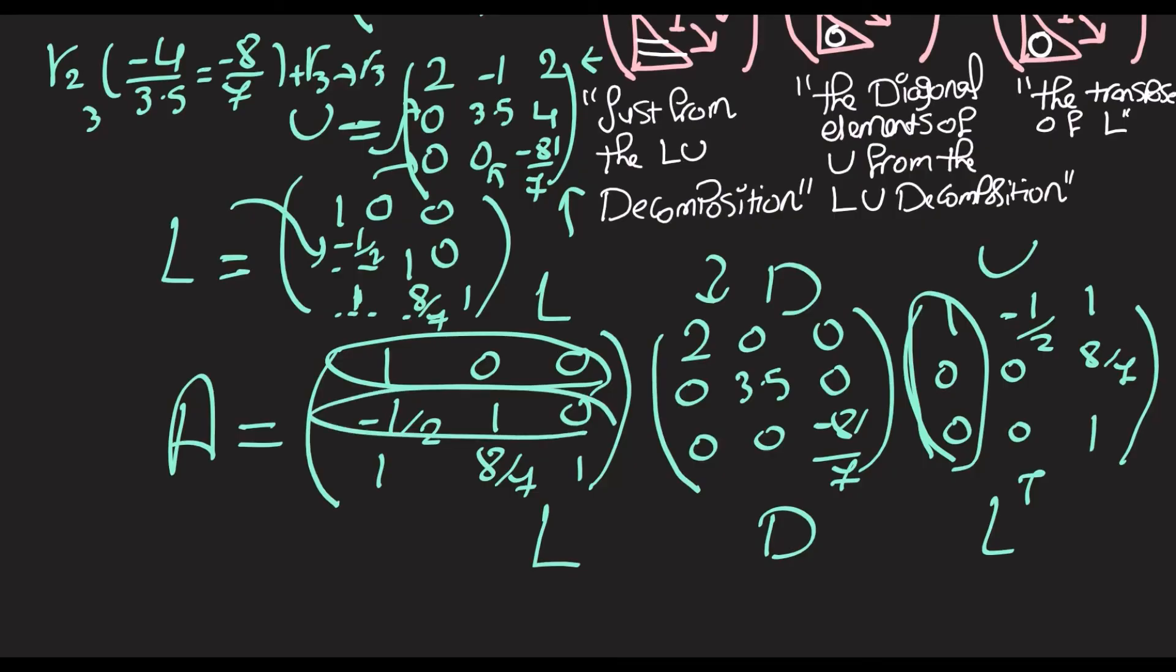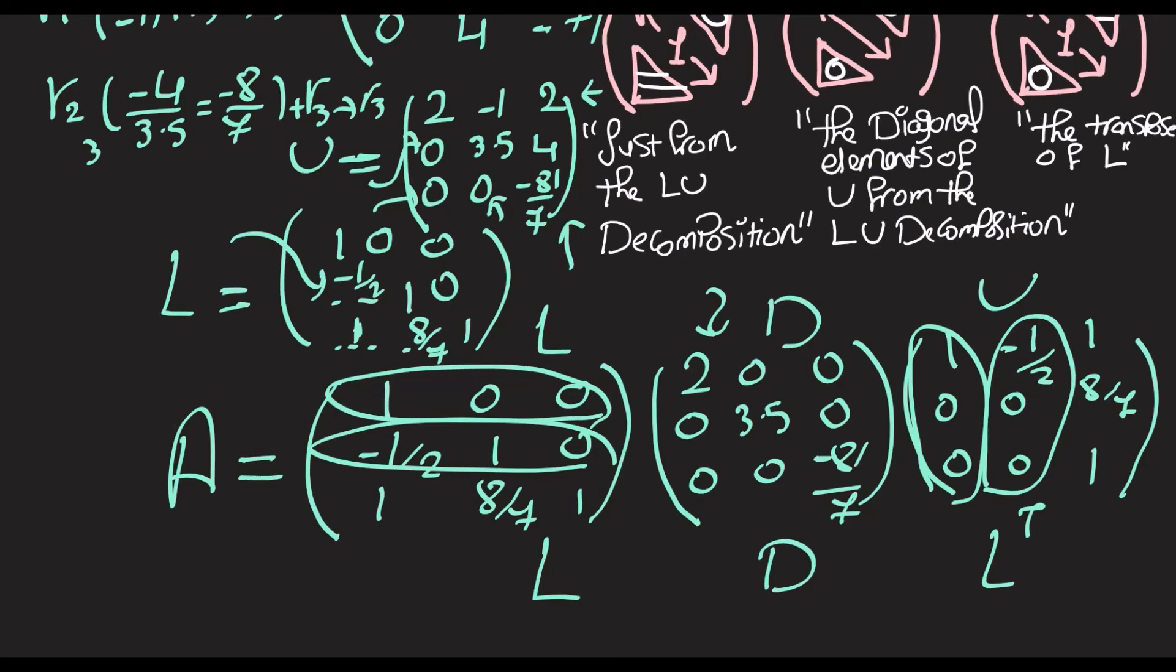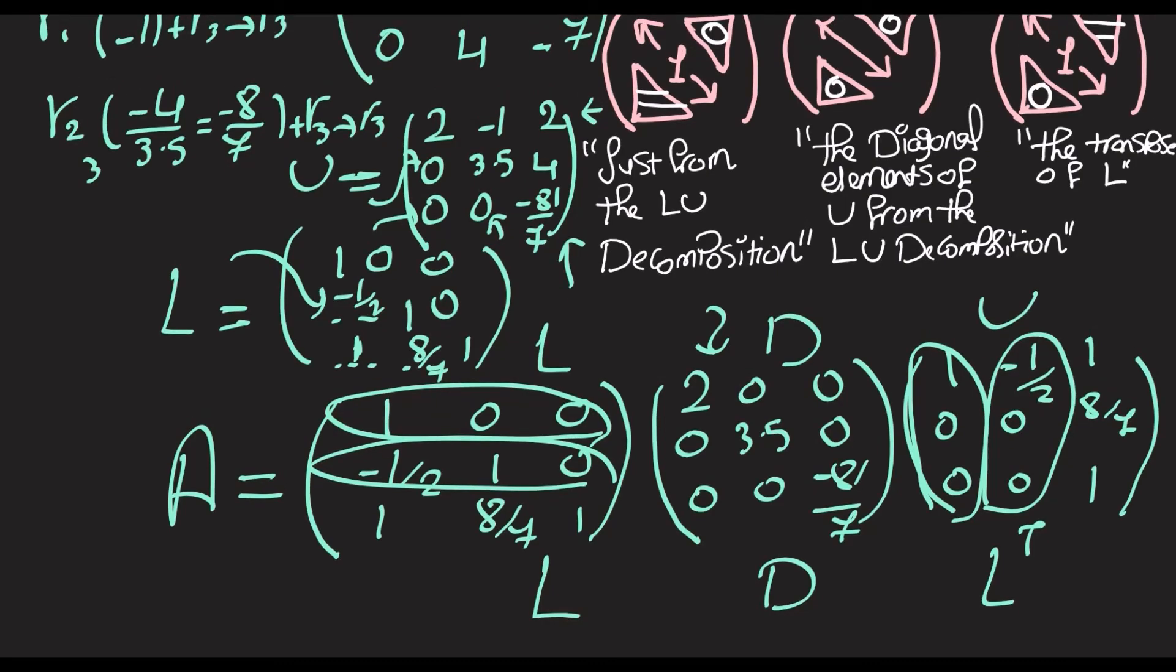This row should be also this column, but something went wrong here. We have to divide by 3.5 in the second row, so this should give us 1. This should have been 1.